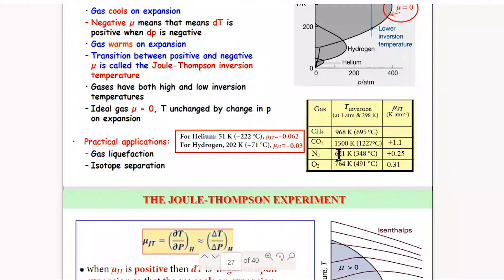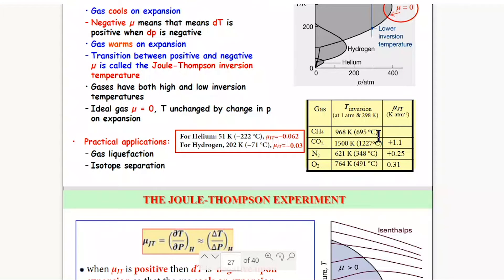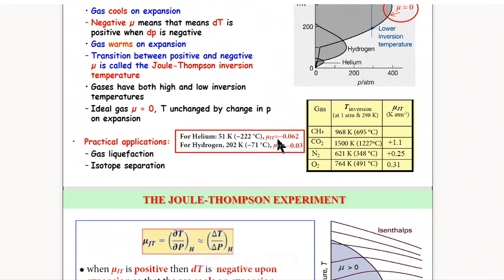This table shows the conditions of 1 atmosphere and 298 K for the measurement of inversion temperature. Under this condition, whichever gas has a positive Joule-Thompson coefficient undergoes cooling during Joule-Thompson expansion. For helium and hydrogen, the Joule-Thompson coefficient is negative, so these gases undergo heating when performing the experiment at 1 atmosphere and 298 K.